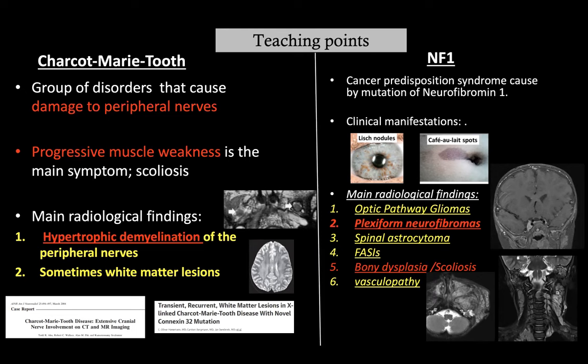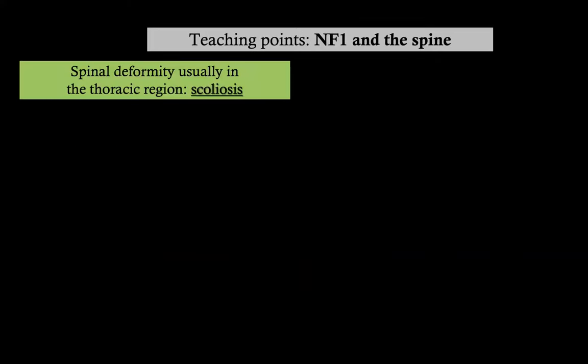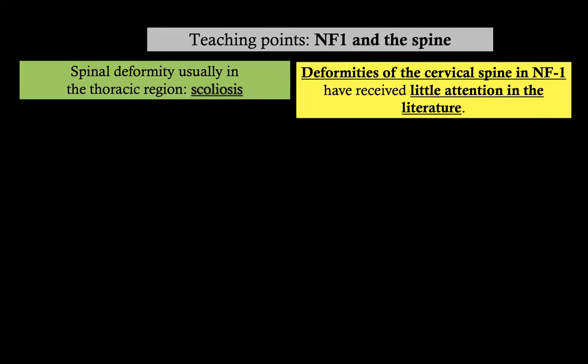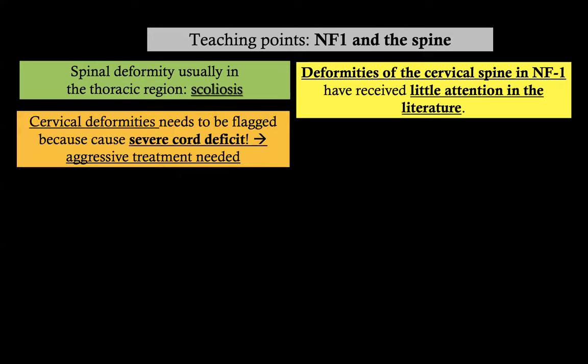NF1 is a cancer predisposition syndrome due to neurofibromin 1. There are other associated manifestations: café-au-lait spots, Lisch nodules, optic pathway glioma, astrocytoma, FASI, and vasculopathy. Remember: plexiform neurofibromas look very different — the nerves come together, they are bulky, and anatomy is not respected. There is scoliosis in NF1 due not only to plexiform neurofibroma but also to primary bony dysplasia. Spinal deformity is usually in the thoracic region, but NF1 can also have cervical spine deformity — which has received little attention in the literature and can cause severe cord deficit.